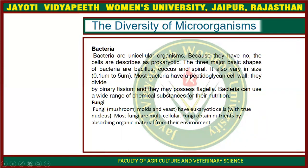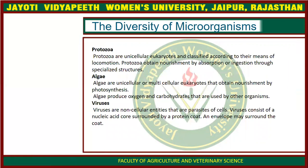In the Kingdom Fungi, they are included in the eukaryotes and most are multicellular in structure. Fungi obtain their nutrients by absorbing organic material from the environment. The next organism included in microorganisms is Protozoa. Protozoa are unicellular and they are eukaryotes. They have a true nucleus and they obtain their nourishment by absorbing or ingesting through their specialized structures.